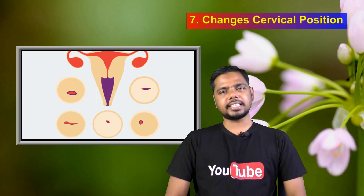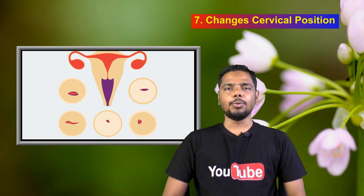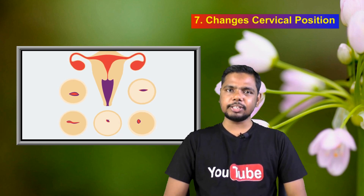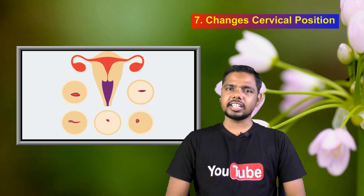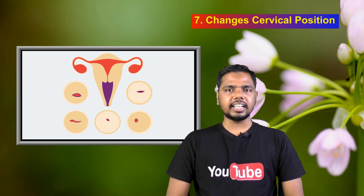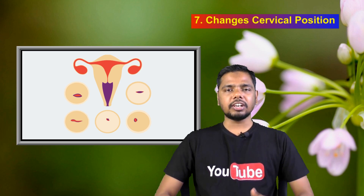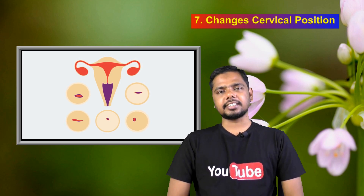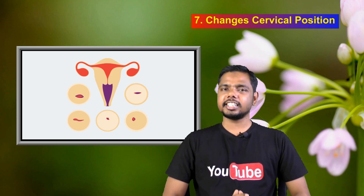And finally, number seven: changes in cervical position. A woman's cervical position can change during ovulation time. Your cervix may be larger than usual at this time. If you insert a finger into your vaginal area, you can find a small nub — this nub is your cervix, but at other times you may not be able to find it.